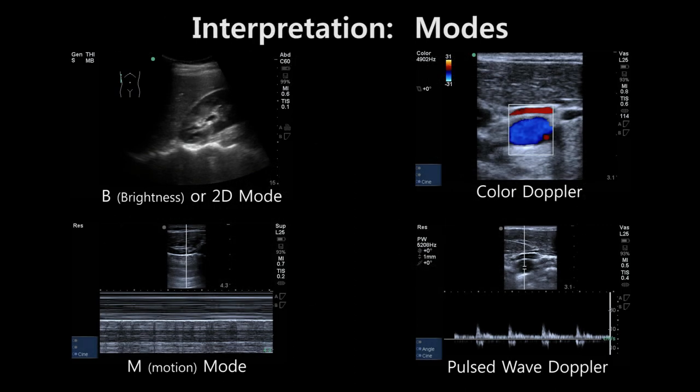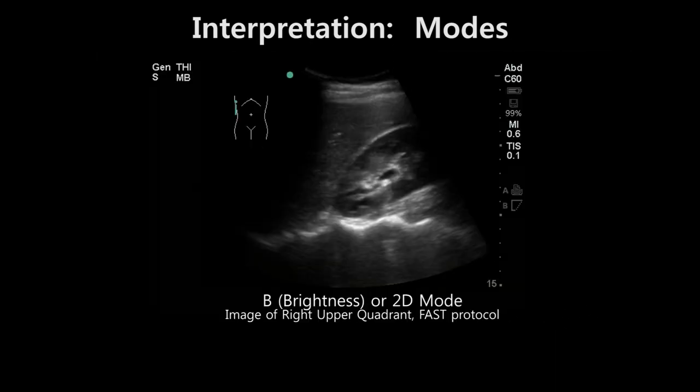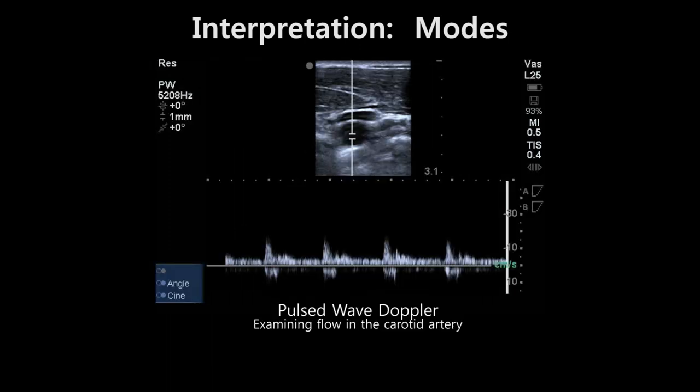The ultrasound machine provides different modes to further characterize and analyze the structures being investigated. 2D, also known as B-mode, is the default imaging mode. Other modes include Doppler, which allows the user to assess the waveform and velocity of vascular flow along a single scan line. This allows the user to determine if an anechoic structure has vascular flow in order to differentiate vessels from other fluid-filled cavities.